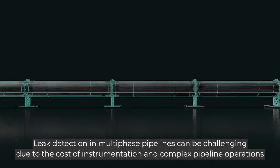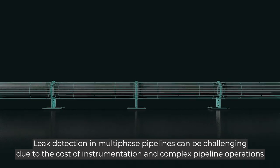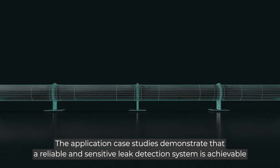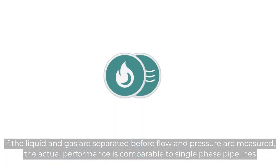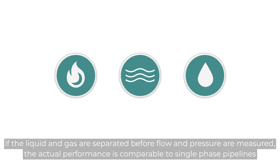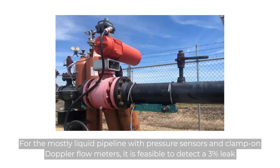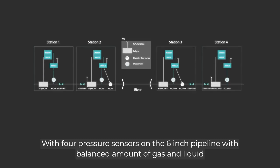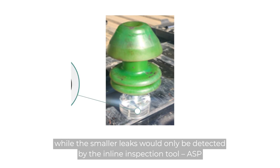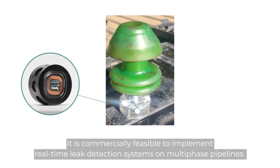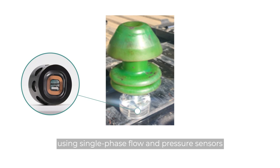Conclusions. Leak detection in multi-phase pipelines can be challenging due to the cost of instrumentation and complex pipeline operations. The application case studies demonstrate that a reliable and sensitive leak detection system is achievable. If the liquid and gas are separated before flow and pressure are measured, the actual performance is comparable to single-phase pipelines. For the mostly liquid pipeline with pressure sensors and clamp-on Doppler flow meters, it is feasible to detect a 3% leak. With four pressure sensors on the 6-inch pipeline with balanced amount of gas and liquid, a reliable online leak detection system is achievable using the pressure wave system, while smaller leaks would only be detected by the inline inspection tool ASP. It is commercially feasible to implement real-time leak detection systems on multi-phase pipelines using single-phase flow and pressure sensors.